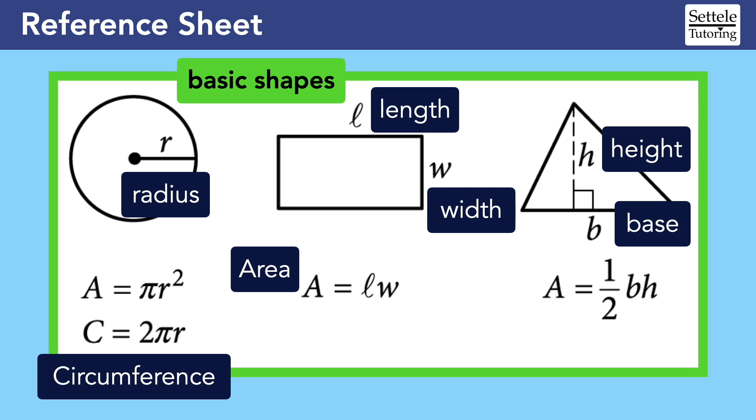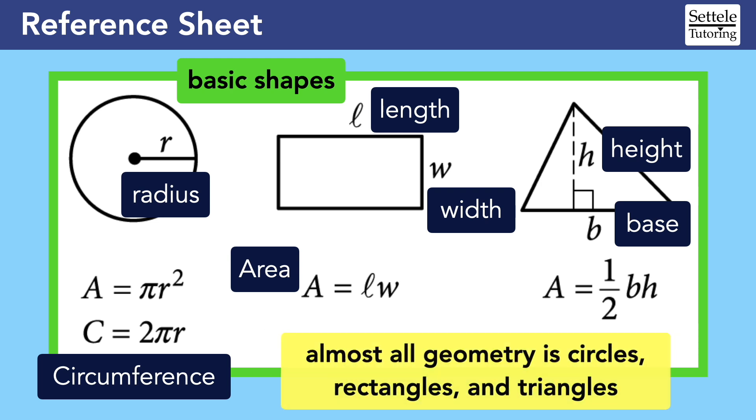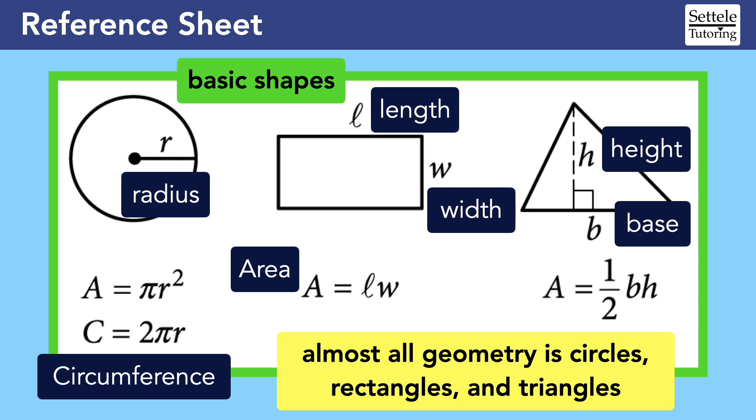Overall, this section of the reference sheet reminds us of a very important strategy for geometry questions, that almost all of geometry is composed of circles, rectangles, and triangles. Even the most complicated shapes like pentagons, hexagons, trapezoids, and sectors can be divided up into these basic pieces. A lot of very hard geometry questions will be solved by remembering this strategy.